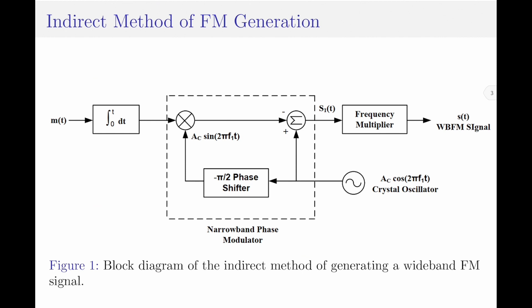Coming to the topic of this discussion — the indirect method of frequency generation — let us consider Figure 1, which shows the block diagram of the indirect method of generating a wide band frequency modulated signal. The system consists of an integrator, followed by a phase modulator, then a frequency multiplier, and lastly a crystal oscillator.